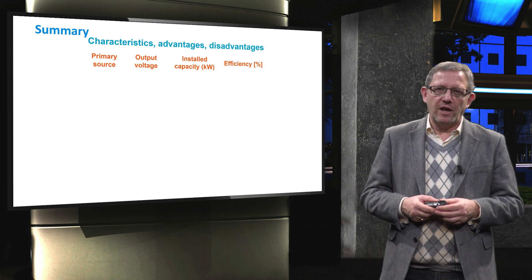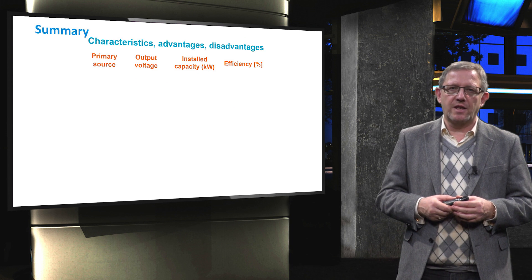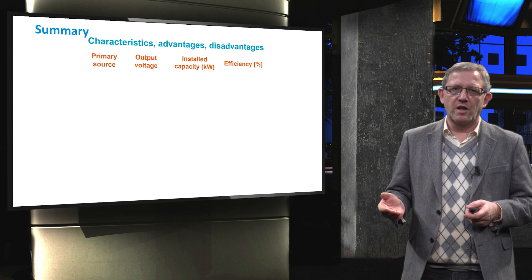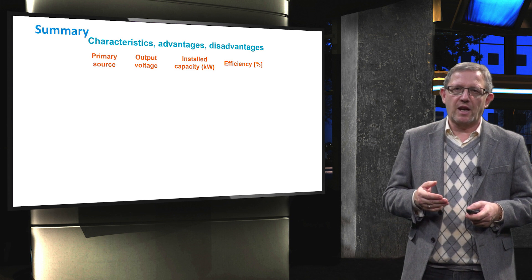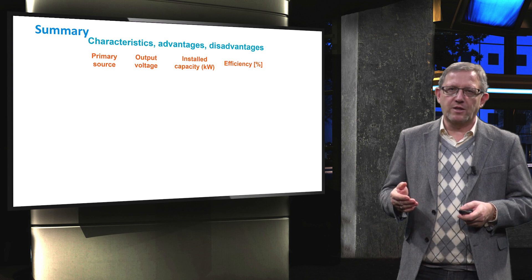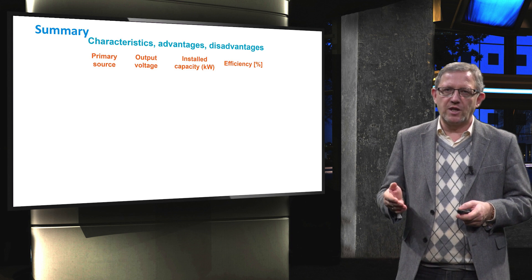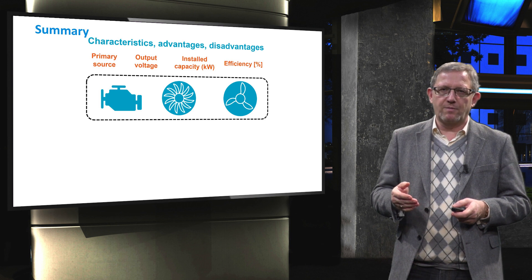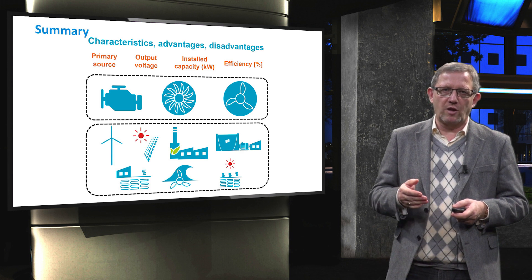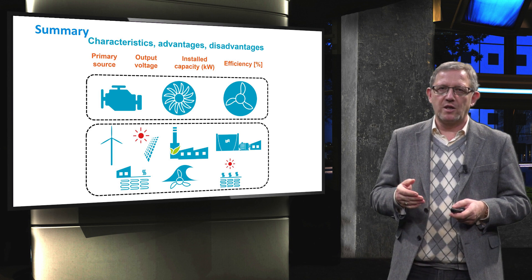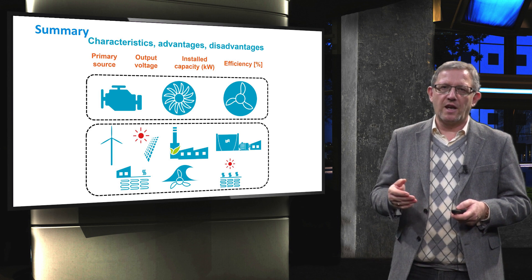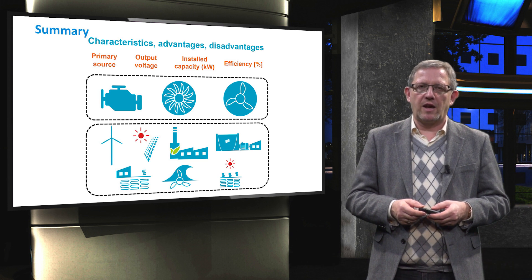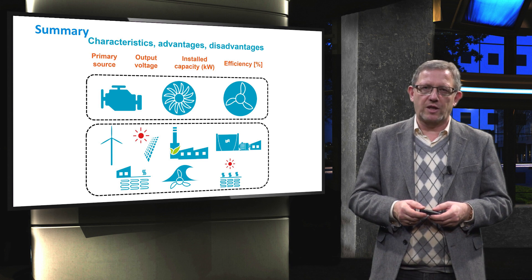In summary, this video covered the characteristics, advantages, and disadvantages in terms of primary source, output voltage, installed capacity, and electrical efficiency for distributed generator units based on non-renewable and renewable energies — including reciprocating engines, gas turbines, and microturbines, as well as wind turbines, solar photovoltaics, biomass power plants, hydro, geothermal, ocean energy, and solar thermal plants. In the next video, we mainly address the advantages and disadvantages of various storage technologies.